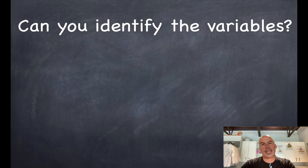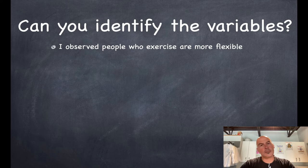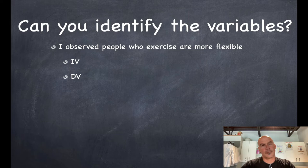All right, let's see if you can identify the variables in these observations. So I observed people who exercise are more flexible. What would your independent variable be? And what would your dependent variable be?